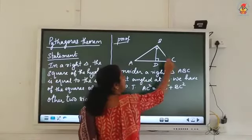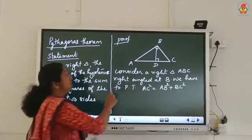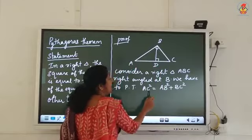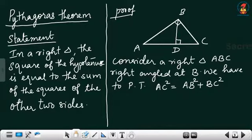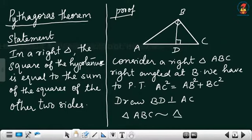When you consider triangle ABC with the right angle at B, AC is the hypotenuse. The square of the hypotenuse, AC², is equal to the sum of squares of the other two sides: AB² + BC². To prove this, draw BD perpendicular to AC. If BD is perpendicular to AC, we can write triangle ABC similar to triangle ADB.